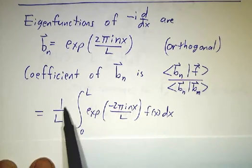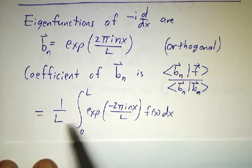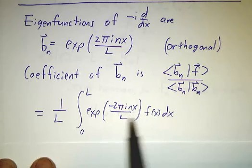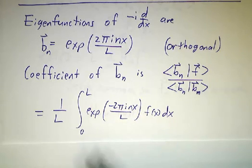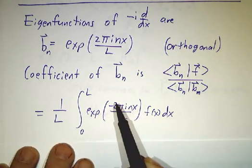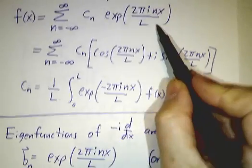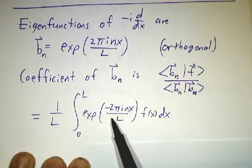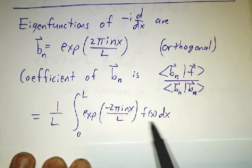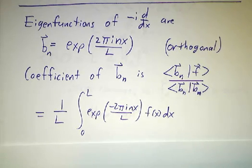The inner product of that with itself is L. The inner product of that with a function, you have to take e^(2πinx/L) and conjugate it. Conjugating the function converts the e^(+2πinx/L) to e^(-2πinx/L). And there's our formula.